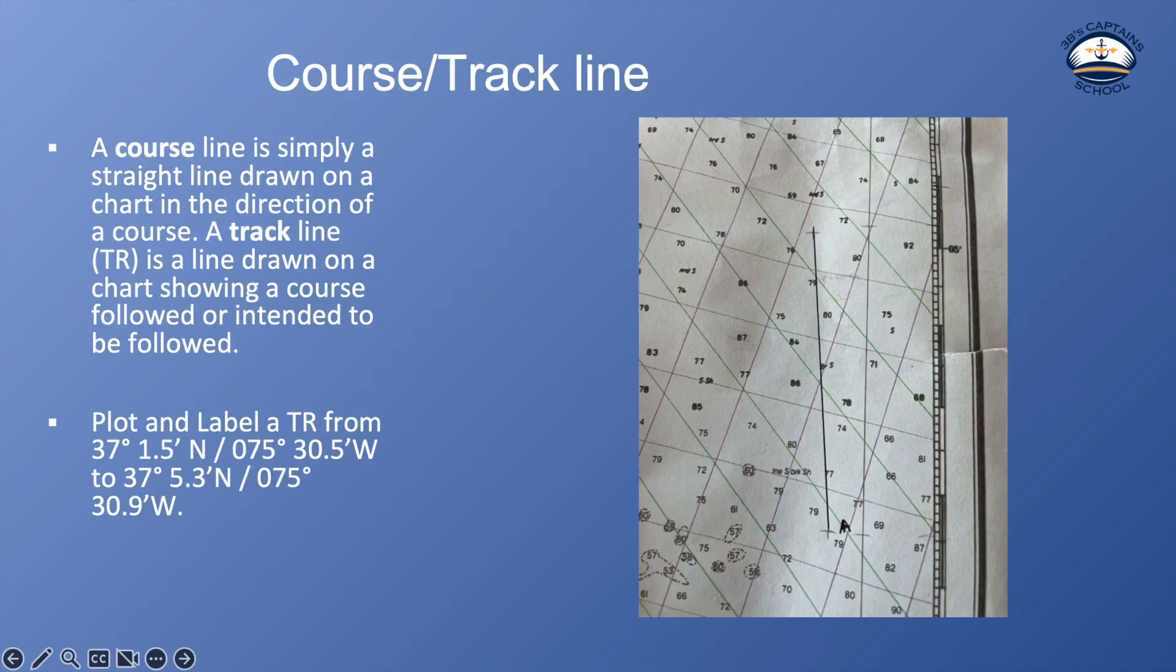So what is a course line or a track line? A course line is simply a straight line drawn on a chart in the direction of a course. So I'm intending to take this course a 005 true. So on my chart I would draw a line on a bearing of 005 true from a starting point and either finish it with a distance or draw it to an ending point.